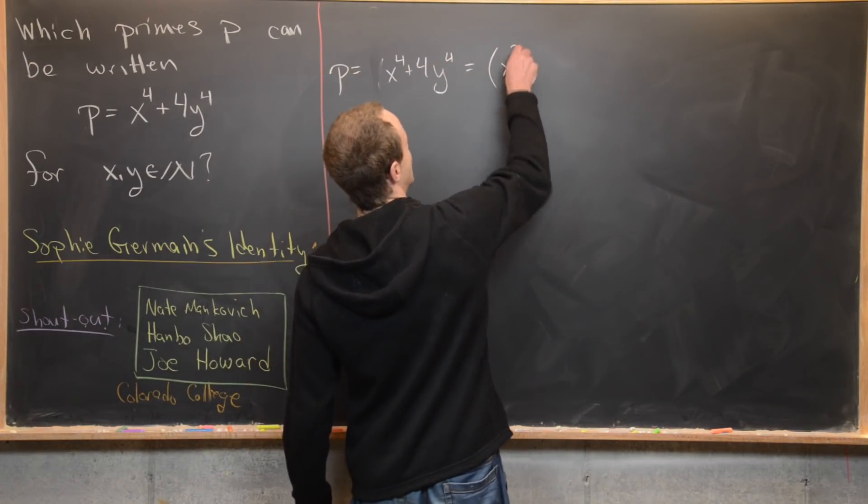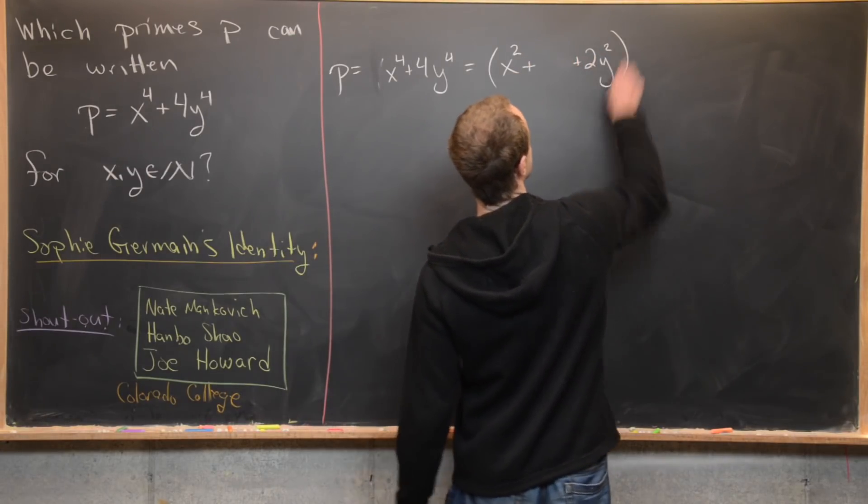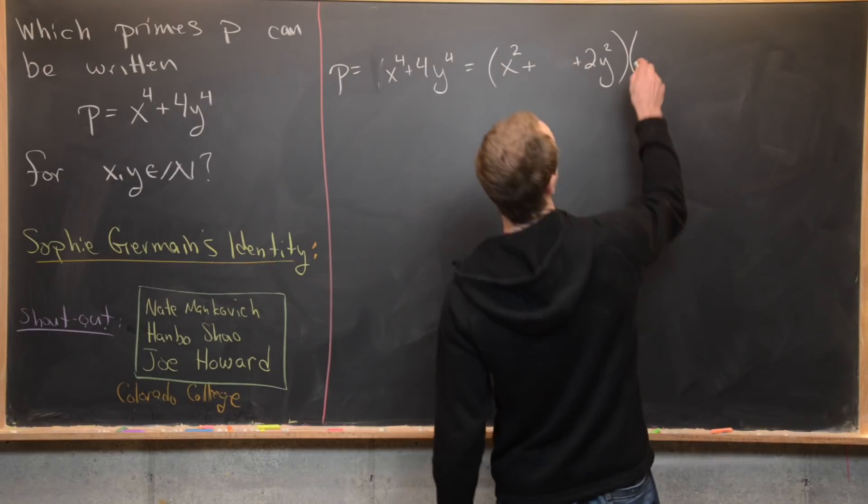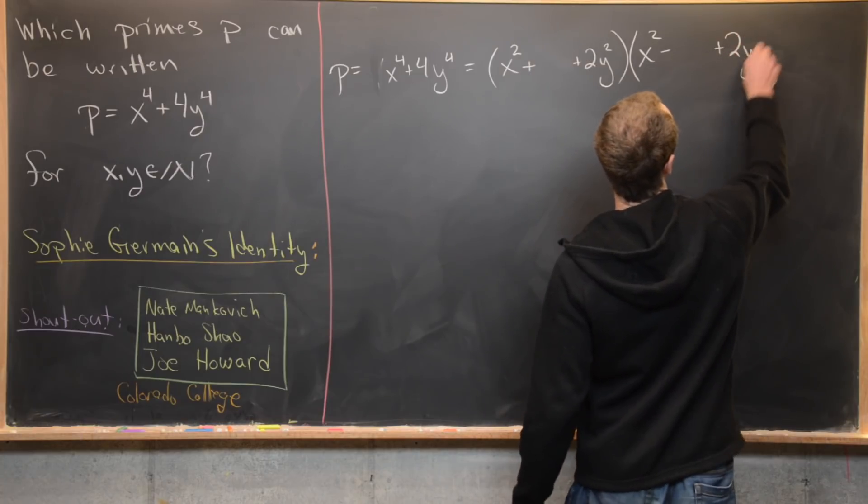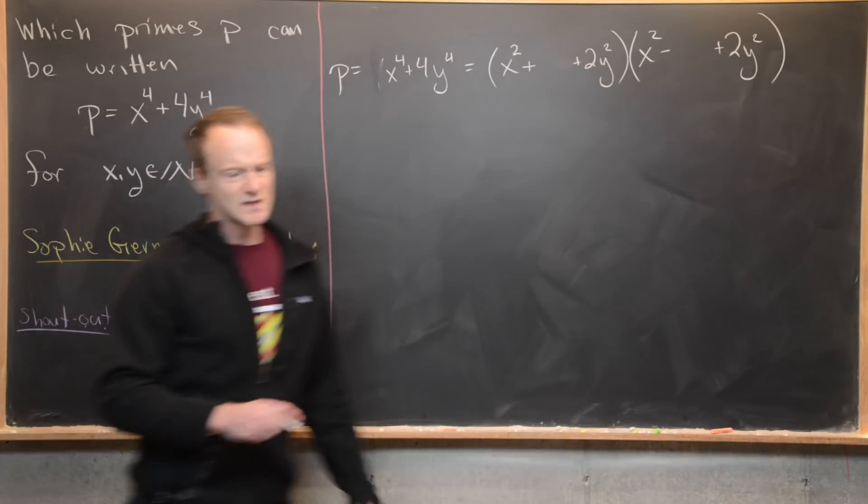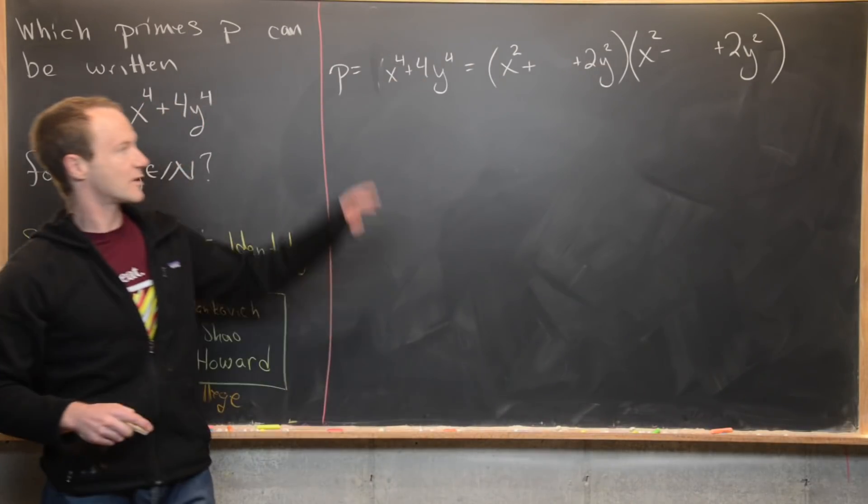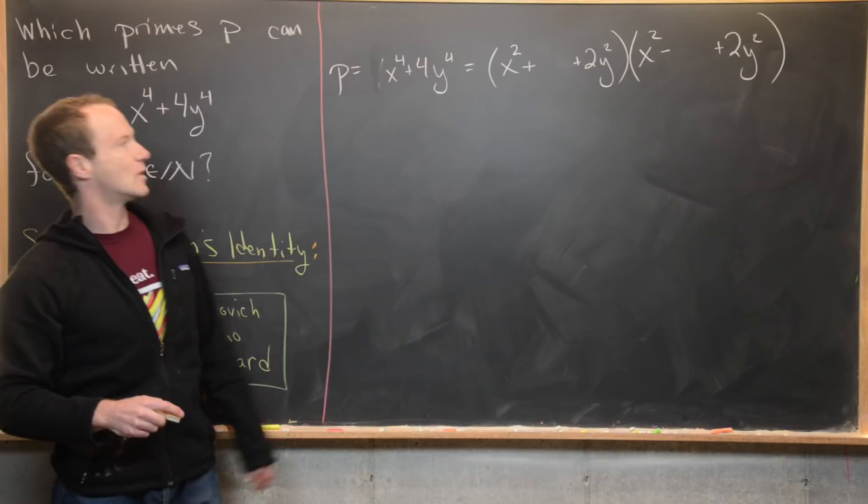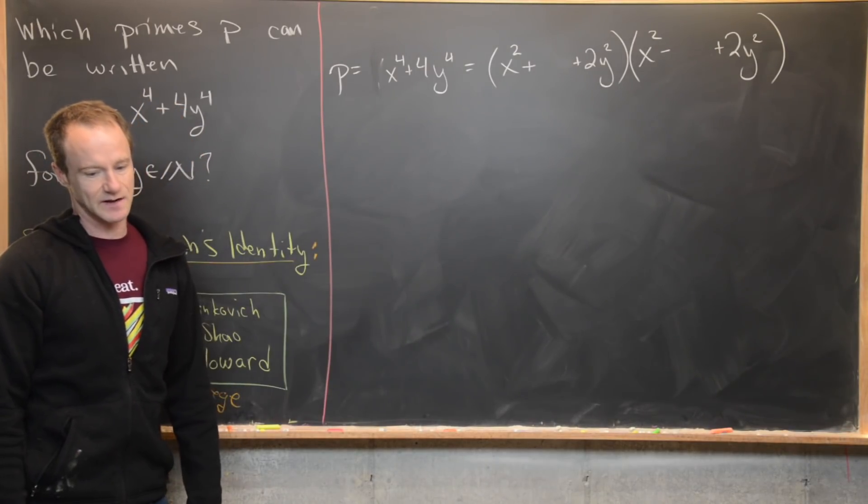We're going to factor like x squared plus something plus two y squared, and then also as x squared minus something plus two y squared. That's the motivation here. Notice we've got x squared times x squared is x to the fourth, two y squared times two y squared is going to be four y to the fourth. So that should set us up nicely.